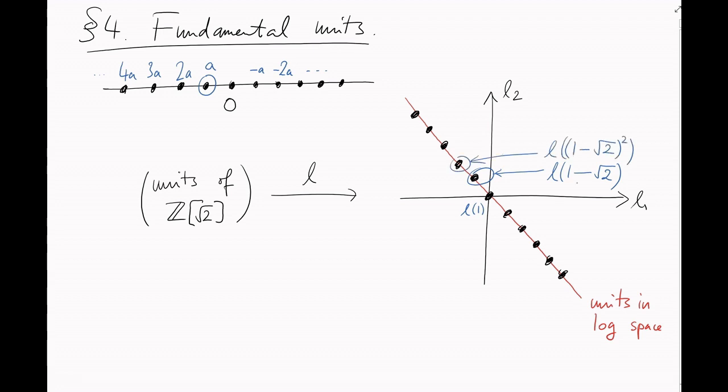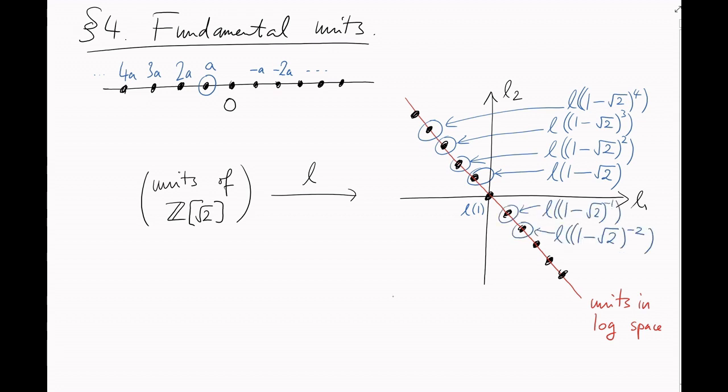Well, an easy calculation shows that this point here is the point representing 1 minus root 2. We'll discuss that more next video. So its square is here, its cube is here, its fourth power is here, and so on. And its inverse is here, its inverse squared is here, and so on.